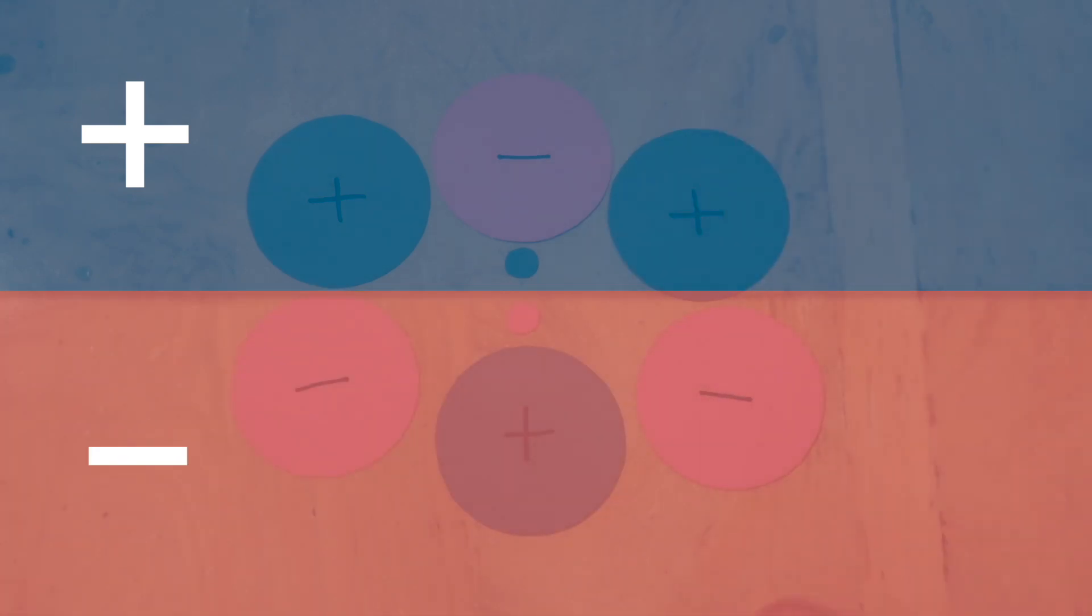And now if you hook a wire between the two, current will flow. The negative electricity is attracted to the positive side of the quartz, so current flows through. And for the same reasons, the same happens for the inverse. So you apply a current, and the crystal will compress or bend a little.